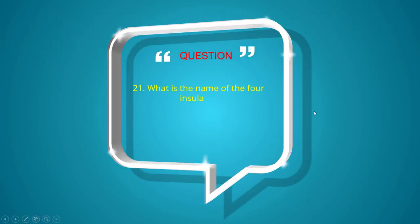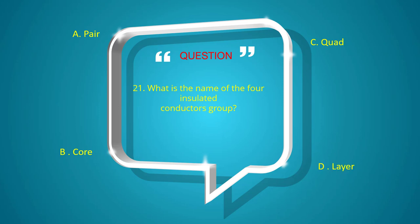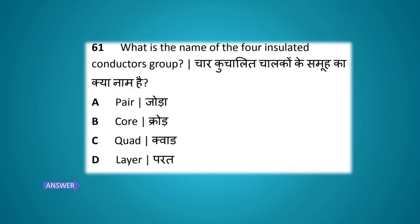What is the name of a four insulated conductor group? Options: pair, core, quad, layer. The answer is quad.